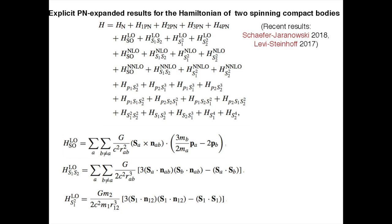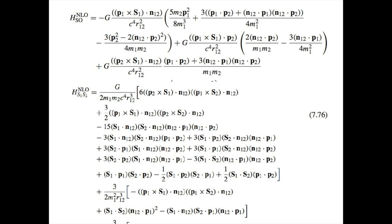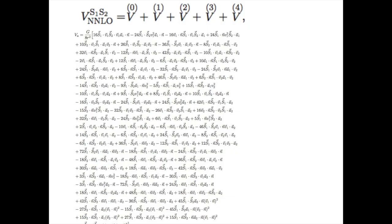Let me flash some results obtained over the last years. Many people contributed over many years, but the most recent results have been obtained by Jaranowski and Schäfer, and by Levi and Steinhoff. You get Hamiltonians decomposed in many post-Newtonian terms for mass and post-Newtonian spin terms — LO means leading order, NLO means next-to-leading order, NNLO means next-to-next-to-leading order. At leading order you have spin-orbit interaction, at NLO something more complex, at NNLO a very complicated spin-dependent Hamiltonian — again going for pages and pages.